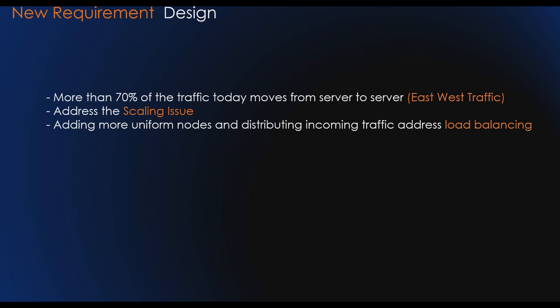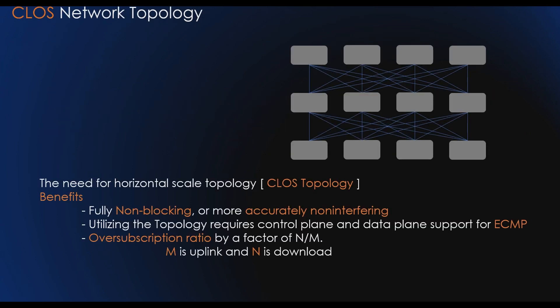Scaling a traditional three-tier architecture to match east-west bandwidth demands becomes either too expensive or impossible due to physical limitations. A preferable solution would be to scale load balancing horizontally by adding more uniform nodes and distributing incoming traffic across those nodes.